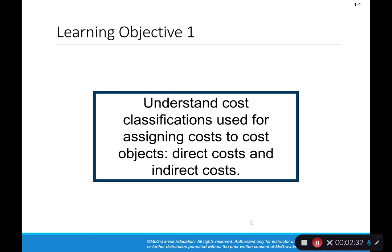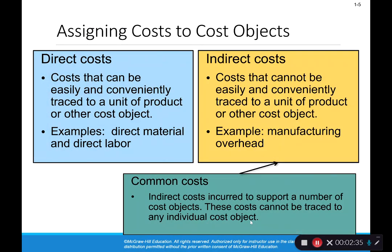The first type of cost classification is direct versus indirect cost. A direct cost is a cost that can be easily and conveniently traced to a unit of product or other cost object. An example would be direct material and direct labor. For an iPhone, the glass is a direct material — it can be directly traced to that cost object, the phone. The wages of the person who glues the glass onto the phone would be direct labor, and you could directly trace that time to the cost object.